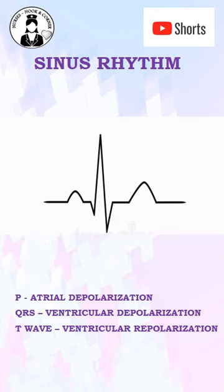Sinus Rhythm is the name given to the normal rhythm of the heart where electrical stimuli are initiated from the SA node and then conducted through the AV node, bundle of His left and right, and Purkinje fibers.